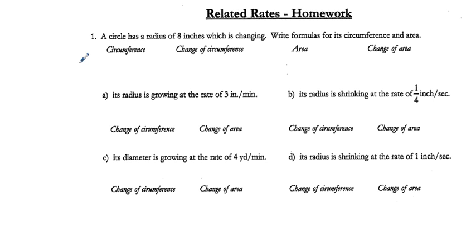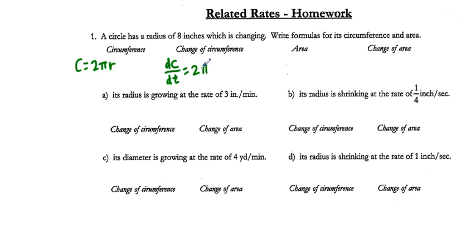Circumference is equal to 2πr. As far as the change of circumference, we differentiate both sides implicitly. The change of circumference is dC/dt, which is equal to 2π times the derivative of r, which is dR/dt. So the change in radius and change in circumference are linearly proportionate.